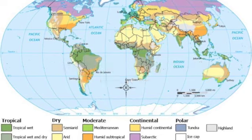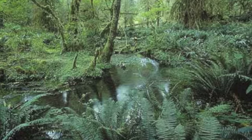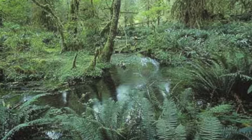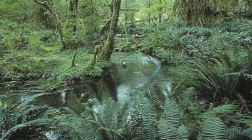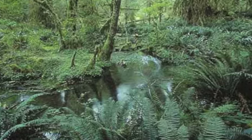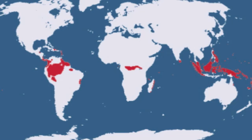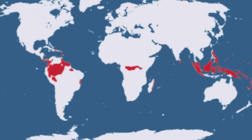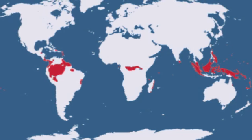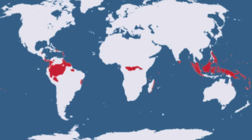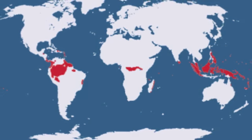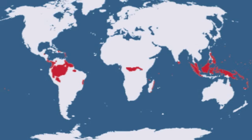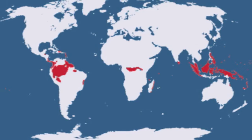First, let's talk about tropical climate. Tropical climate consists of two climate regions: tropical wet and tropical wet-dry. Tropical wet is only found along the equator. Areas of tropical wet are found in Brazil, Indonesia, and the Philippines. Seasons don't change in tropical wet, so there is only one season.